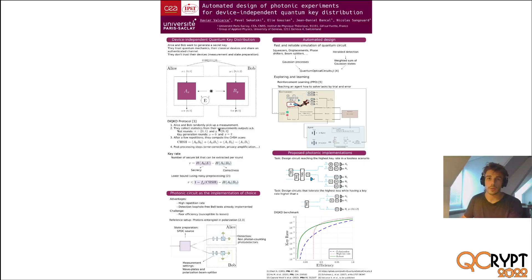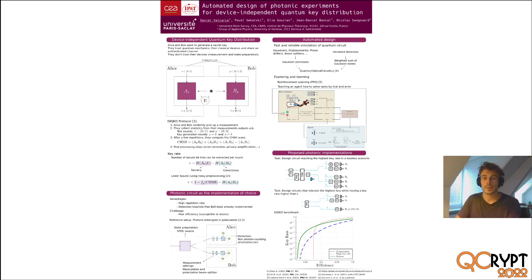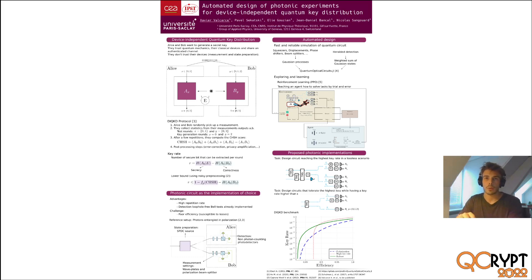Let's start with an overview of my poster. It is in four parts. First, to grasp the motivation behind this project, I will give a quick overview on device-independent quantum key distribution, followed by the presentation of the standard implementation using quantum optical circuits. Then we will move on to the core of this project, which is the automated design part — our approach to find optical circuits to implement device-independent quantum key distribution in a fully automated way. Then I will present some of the circuits that we found using our method and compare them to the standard implementation.